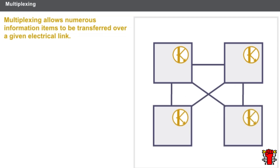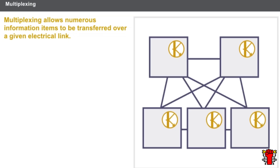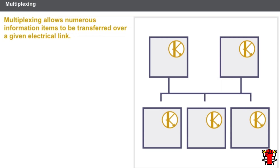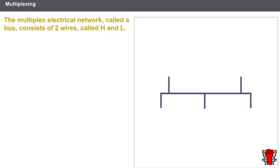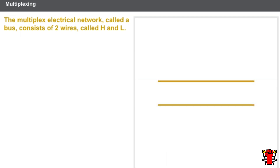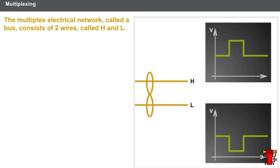The number of links required for these exchanges is likewise increasing. Multiplexing allows numerous information items to be transferred over a given electrical link. The multiplex electrical network, called a bus, consists of two wires called H and L. These two wires are twisted to avoid the appearance of interference. The same electrical signals are transmitted over the two wires, but in reverse direction.